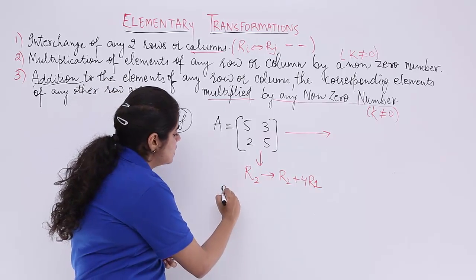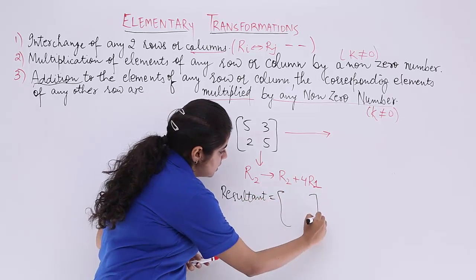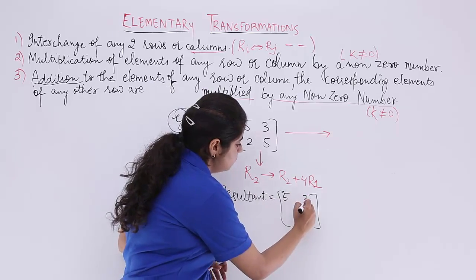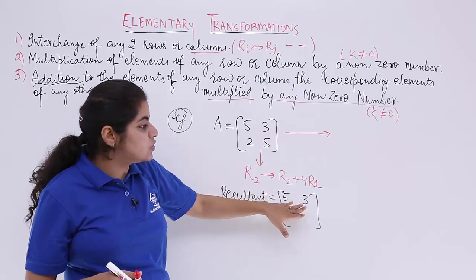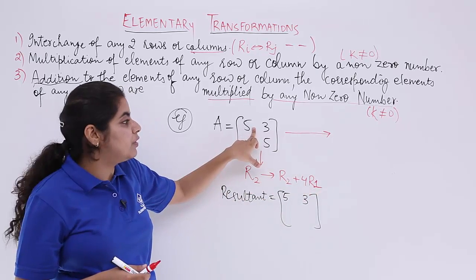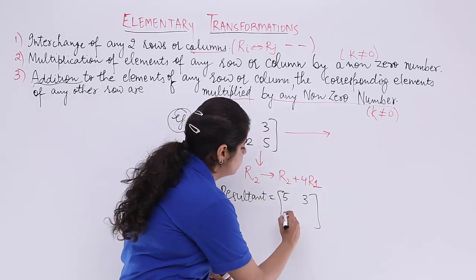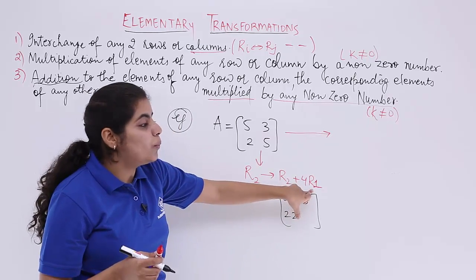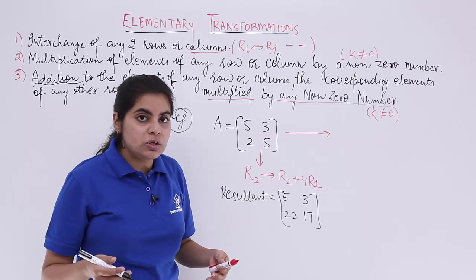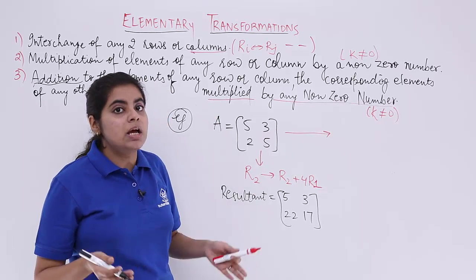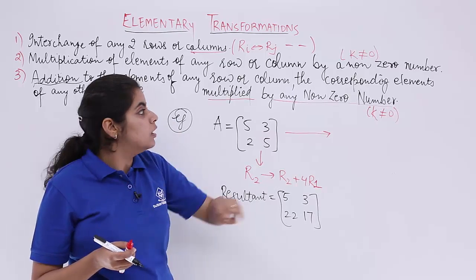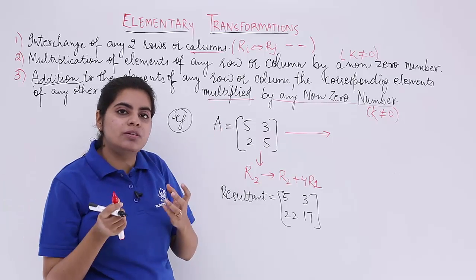Applying R2 → R2 + 4R1: the first row remains unchanged as [5, 3]. For the second row: 4×5 = 20, plus R2 element 2 gives 22; then 4×3 = 12, plus R2 element 5 gives 17. The resultant matrix is [5, 3; 22, 17]. These transformations will be used more and more when finding the inverse of a matrix using row and column operations.